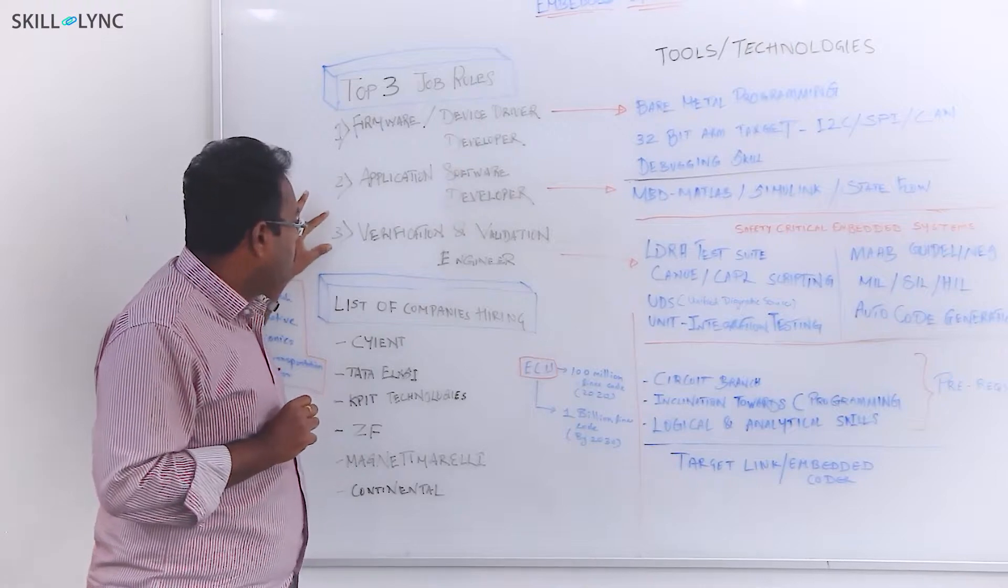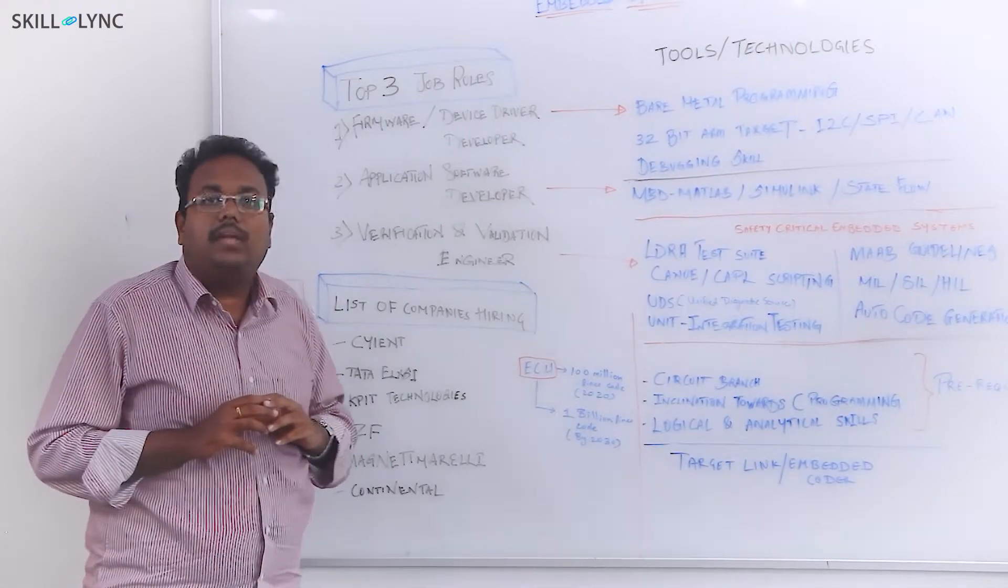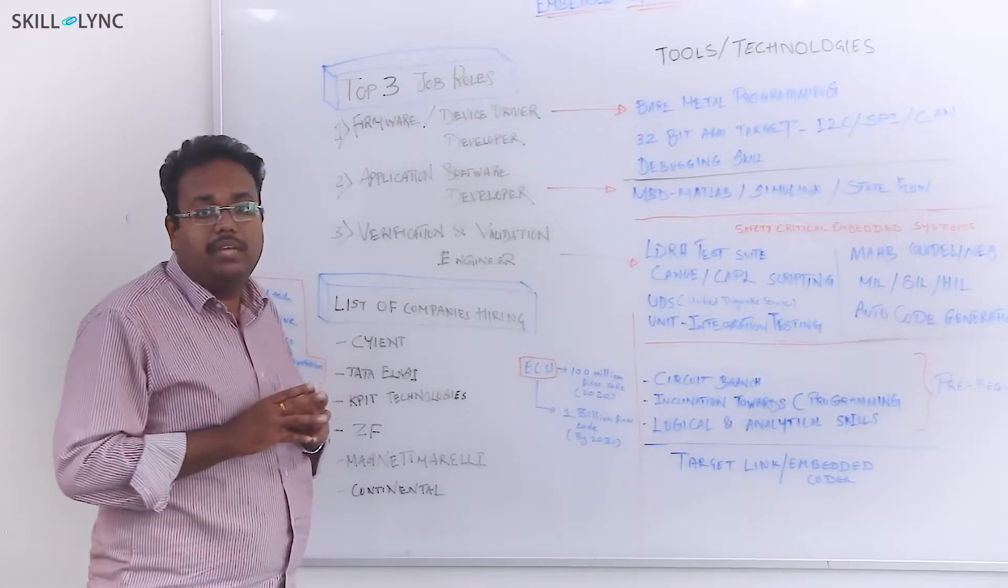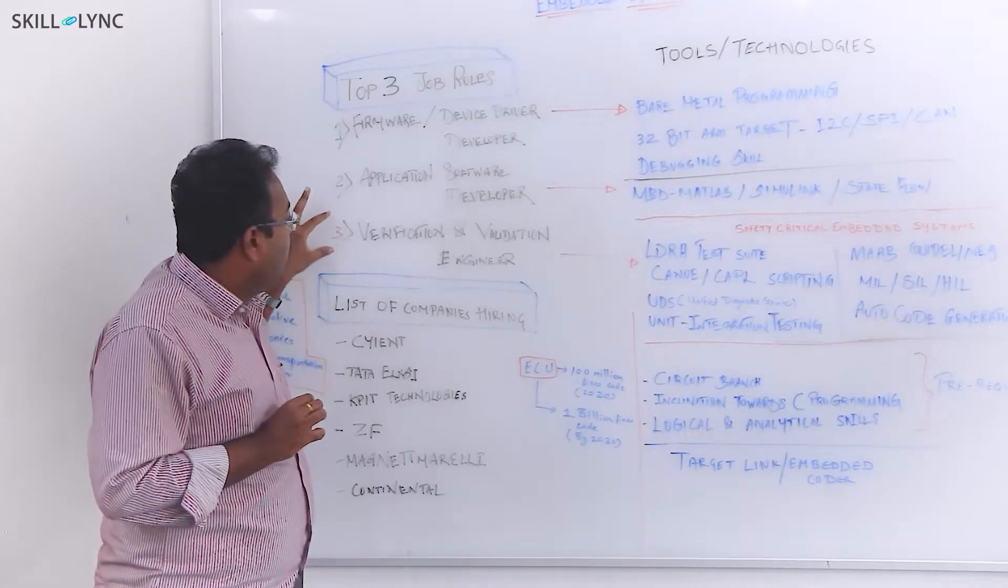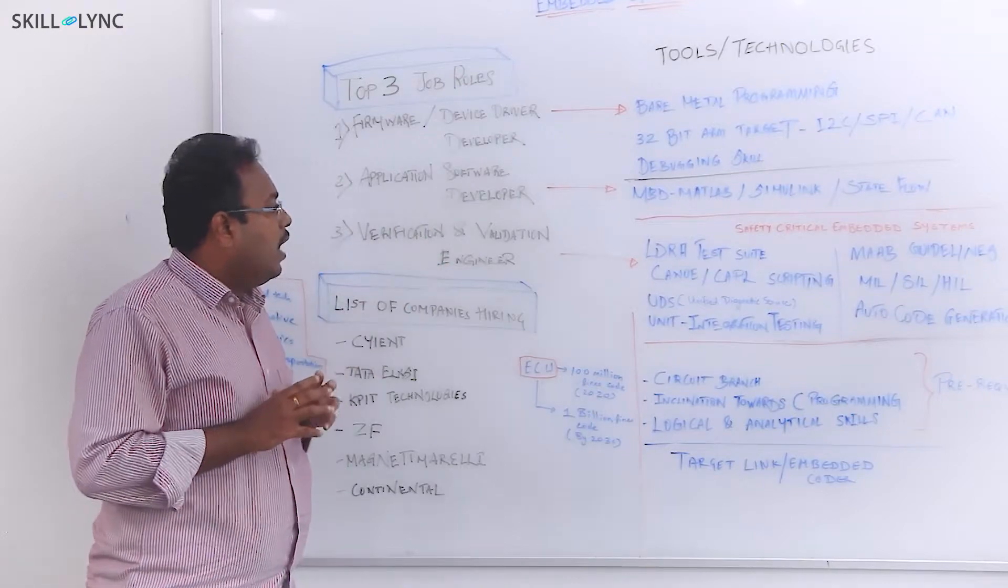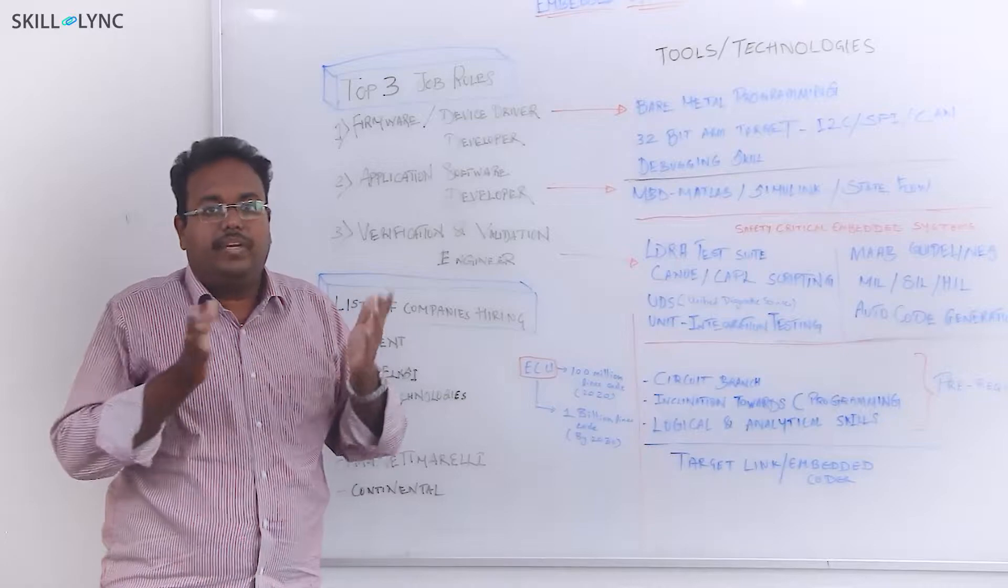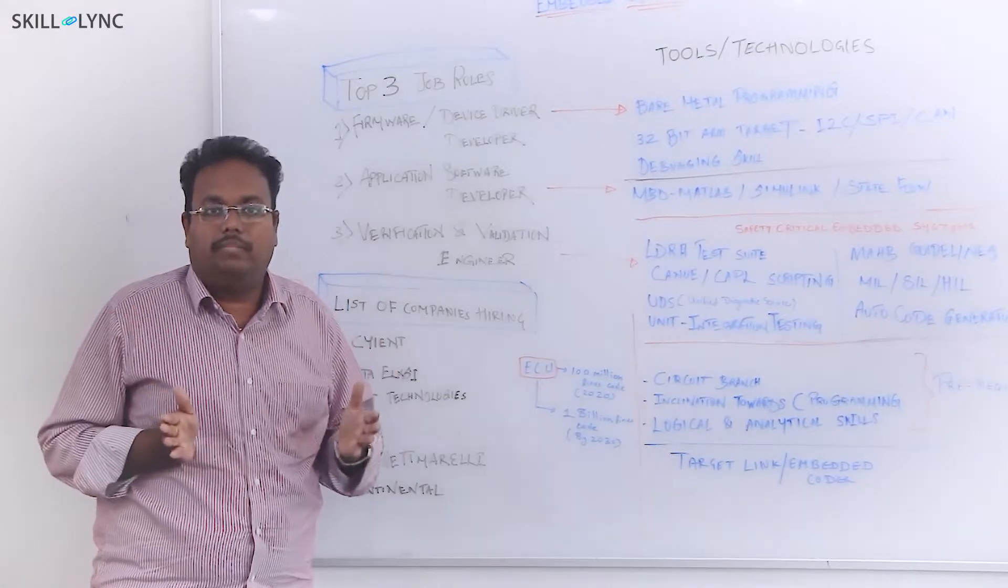The first role is set of people who dedicatedly devote their time in developing the base software, whereas the second job role is for members working more towards application software development. The third role is the biggest large pie on the embedded software development lifecycle. These people, verification and validation engineers, will spend their time verifying and validating the code base that was developed.